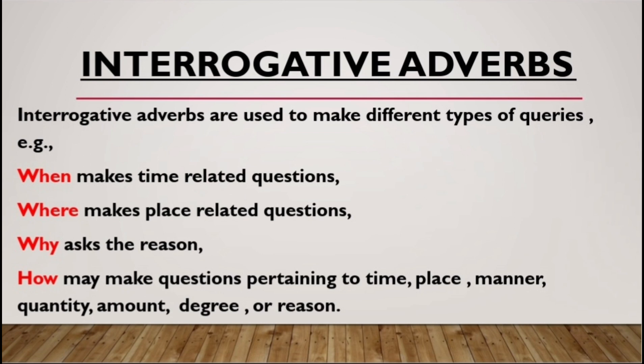The next is 'where.' Where makes inquiries that are related to place. For example: 'Where did you go in the afternoon?' — and the answer would be a specific place, such as 'at the masjid.' So 'where' asks questions related to place.